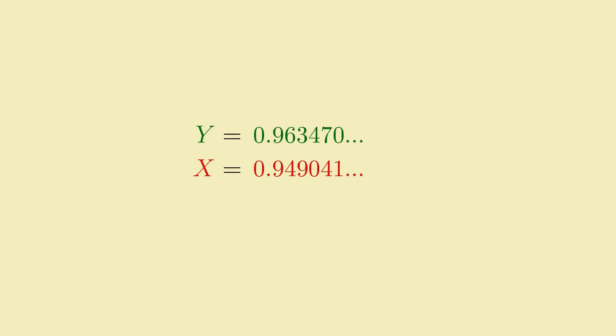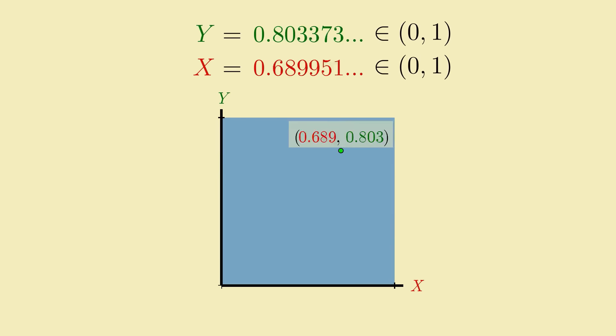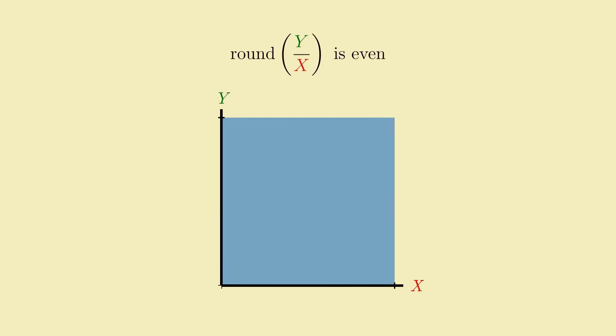To get started, it'd be helpful to have a good way to visualize the scenario we're dealing with. Since we're picking two independent random numbers in the range 0 to 1, this is equivalent to picking a random point in the 1 by 1 unit square in the xy plane. The collection of points that satisfy our condition, where rounding the ratio y over x gives an even number, will correspond to some region in the unit square. What will it look like?